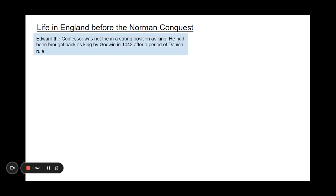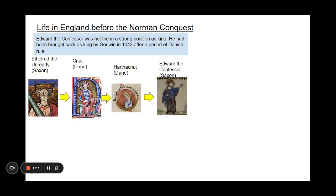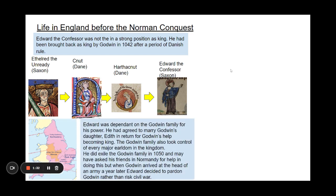So, life in England before the Norman Conquest. Edward the Confessor was not in a very strong position as king. He had been brought back as king by Godwin in 1042 — that's Earl Godwin — after a period of Danish rule. We had Æthelred the Unready as a Saxon king, then Knut and Harthacanut, both kings of England, before Edward the Confessor. So he's been brought back after this period of Danish rule, and was entirely dependent on the Godwin family for his power. He had agreed to marry Godwin's daughter, Edith, in return for Godwin's help becoming king.